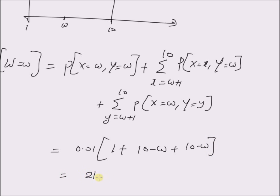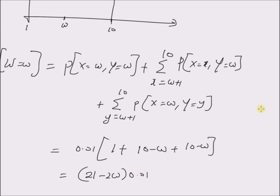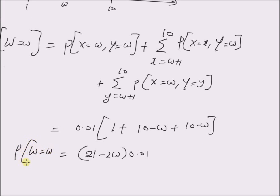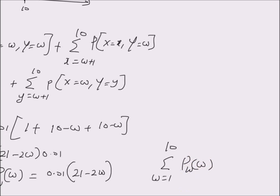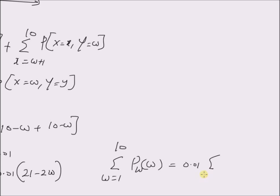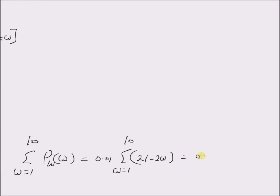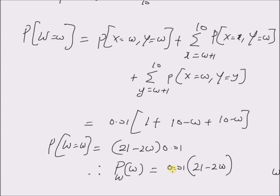So the expression for P(W=w) — that is, the probability mass function p(w) — is given by 0.01 × (21 − 2w). We can easily verify this result by computing the sum from w=1 to 10 of p(w), which equals 0.01 × Σ(21 − 2w) for w=1 to 10. Upon simple calculation, this equals 210 − 110, which is equal to 1. Thus, we can derive the probability mass function of a new random variable — in this case, the minimum of two random variables X and Y — from the given joint probability mass function. Thanks for watching.